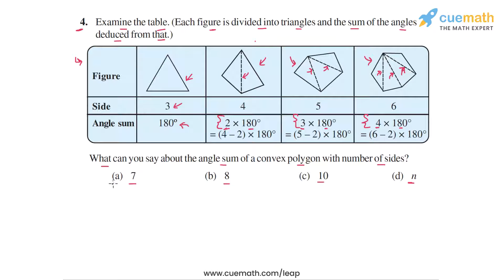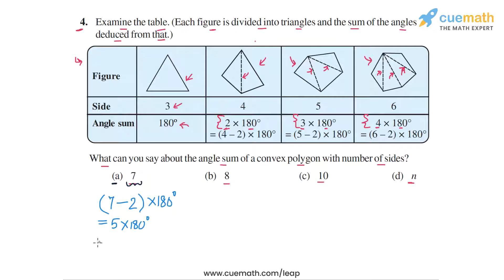In part A, we find the angle sum of a convex polygon with 7 sides. For a convex polygon with 7 sides, we can split it into 7 minus 2 = 5 triangular parts. The angle sum in each part is 180°, so the total angle sum is (7 − 2) × 180 = 5 × 180 = 900 degrees. For any convex heptagon, the angle sum is 900 degrees.